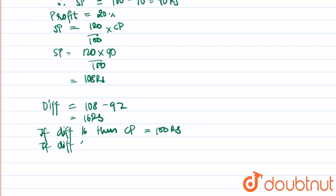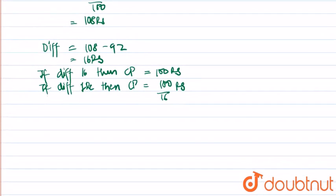If there was a difference in selling price of 1 rupee, then cost price would be 100 upon 16 rupees. So for a difference of 36 rupees, the cost price of the article is 100 upon 16 into 36 equal to 225 rupees.